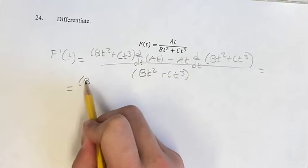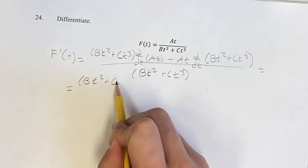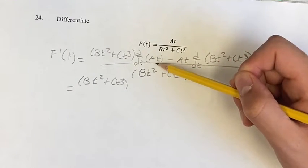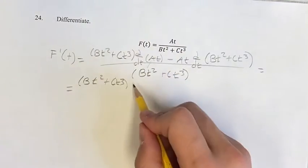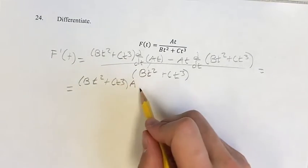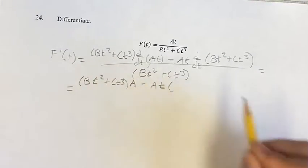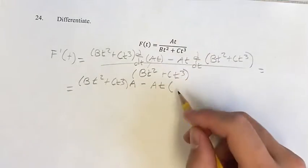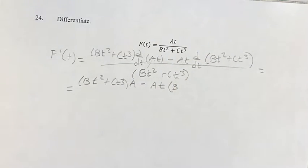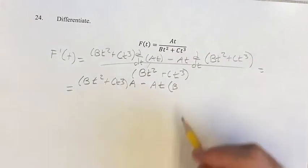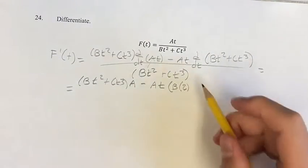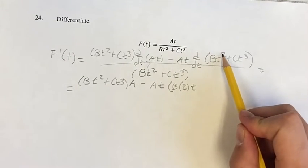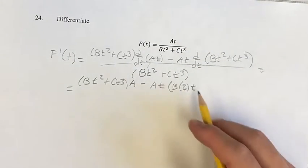First step is to get rid of those derivatives. The derivative of At—this is a linear term, so its derivative is just its coefficient, which is the constant A—minus At times the derivative of Bt squared. We have a power function here, so first write your coefficient out in front, then bring down the exponent, multiply against the coefficient, and your new exponent is the old one minus 1. So we have t to the 2 minus 1, which is t to the 1, which is just t.